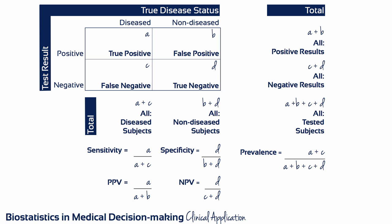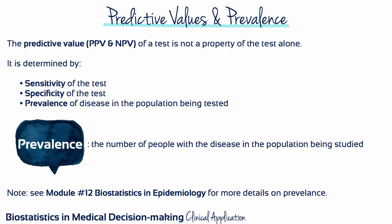This 2x2 table template should be familiar to you from module 11. I've added the equation for prevalence at the bottom right. You learned about and had practiced calculating positive predictive values and negative predictive values last week in class. The predictive value of a test is not a property of the test alone — it's determined by sensitivity, specificity, and the prevalence of disease in the population being tested. We'll spend more time on the subject of prevalence in module 12.